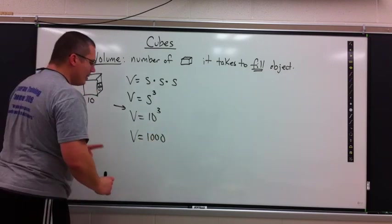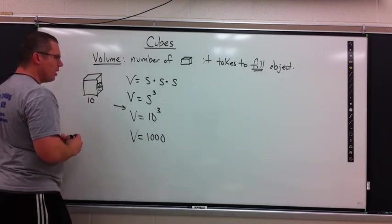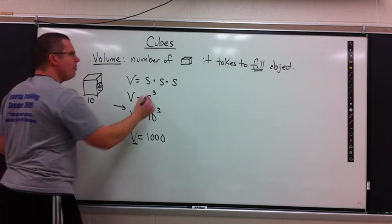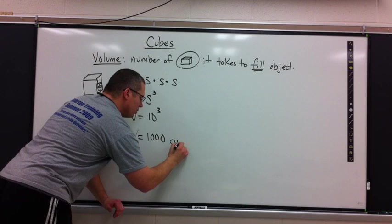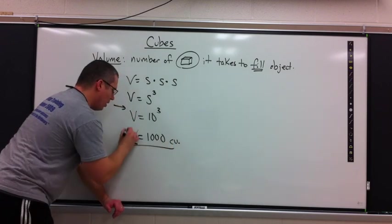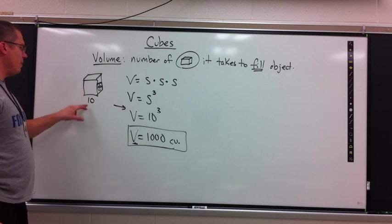Labels are very important. Is this squares or is it cubes? Did I find volume? Did I find surface area? I clearly found volume. Volume is the number of cubes. So my label is cubes. 1,000 cubes it would take to fill up this thing.